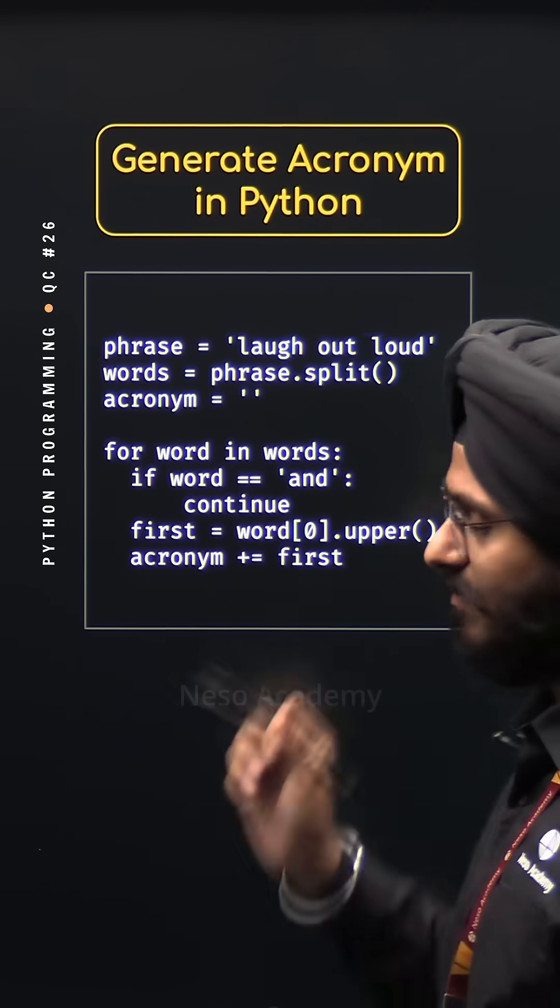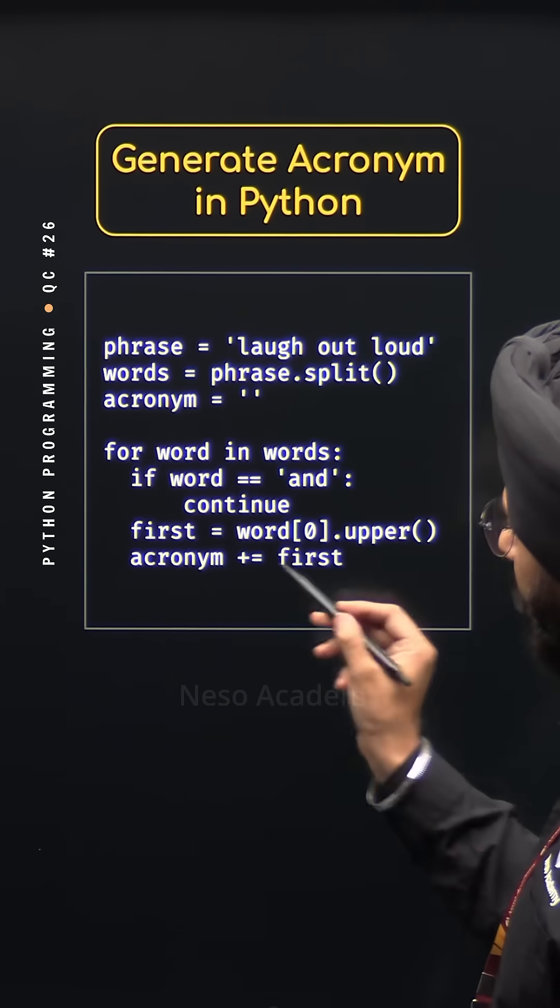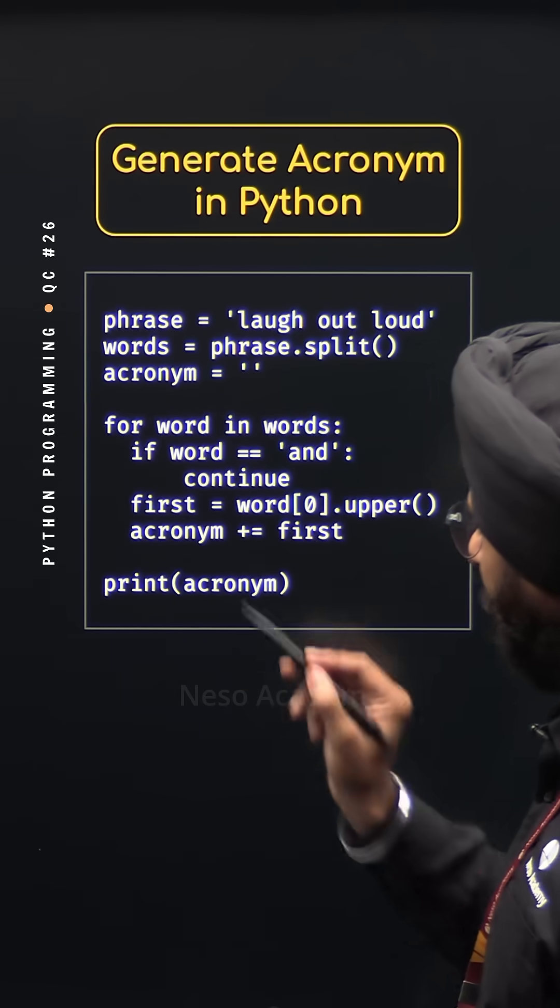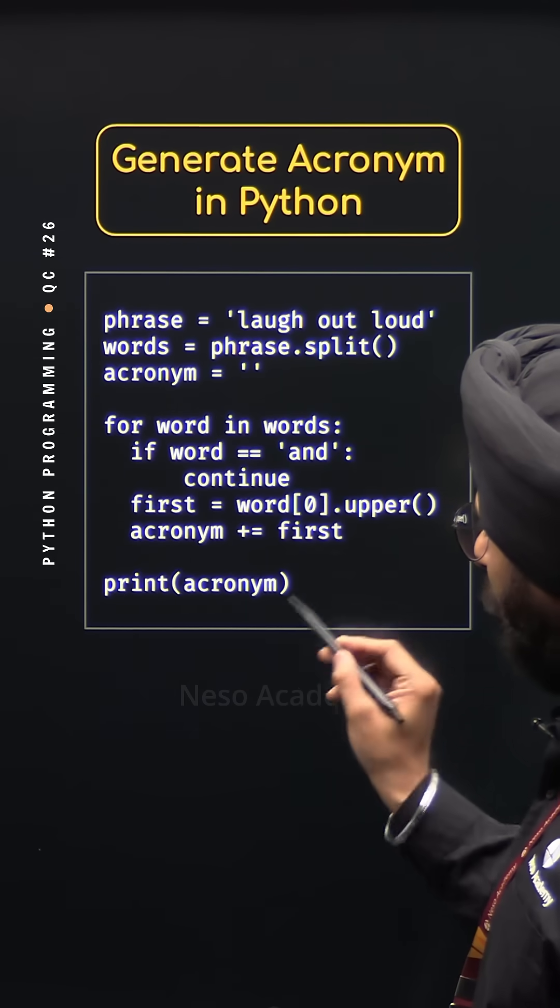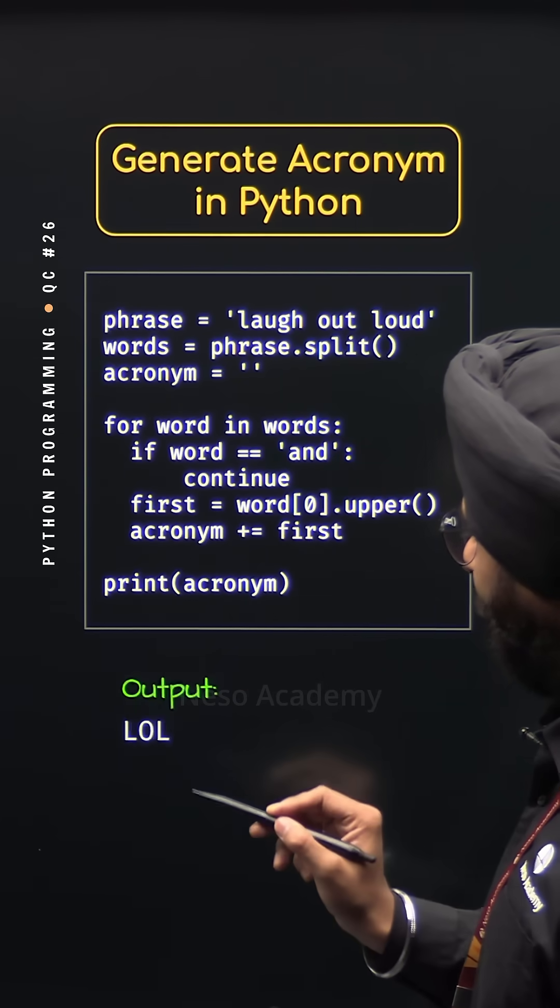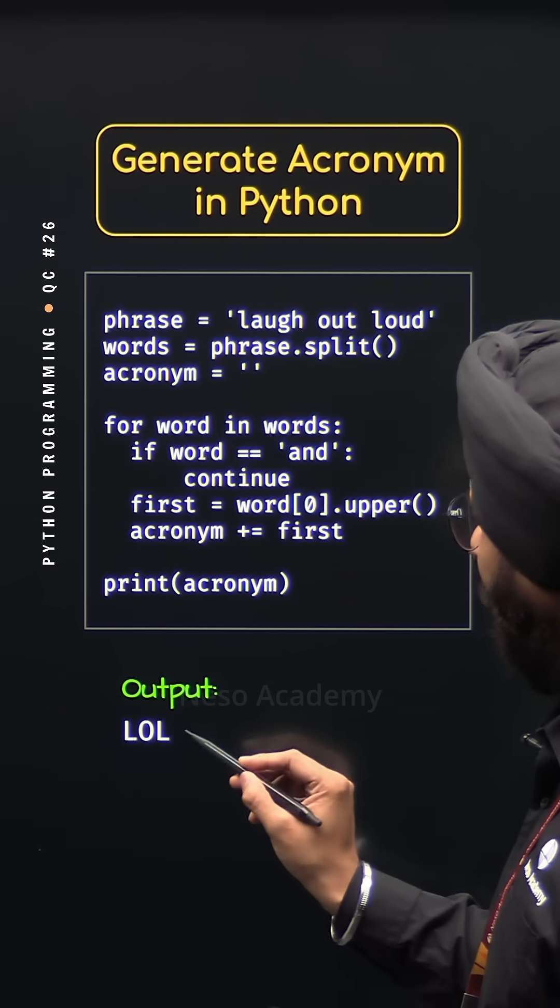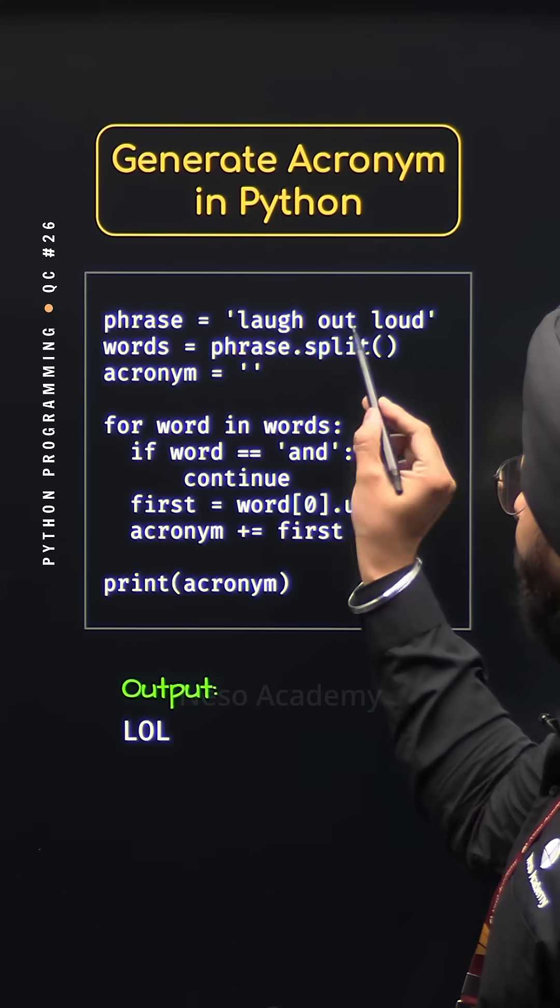After completion of this for loop, we will get the acronym and then we can print the acronym with the help of the print function. After execution, we will get the output, LOL, which is the acronym for laugh out loud.